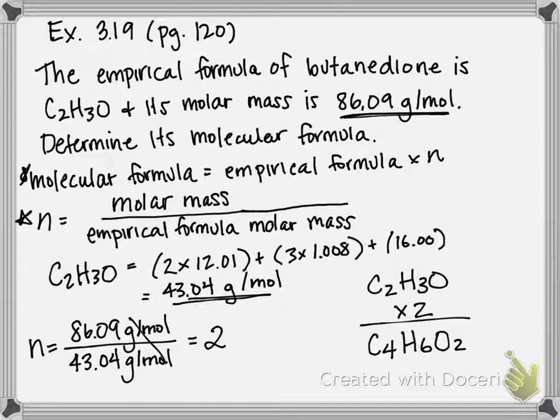So your molecular formula for butanedione is C4H6O2. And that's how to determine molecular formula given molar mass and the empirical formula.